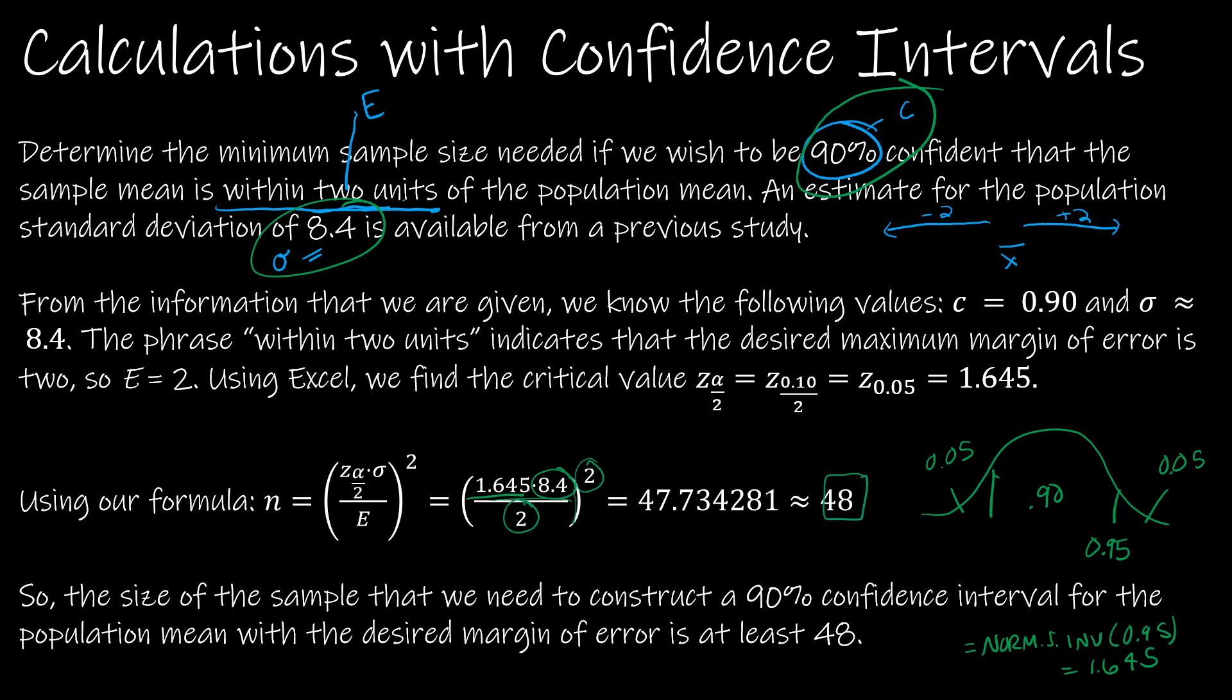And that's about 48. So we always are going to round up. So about 48. So the sample size that we need to construct a 90% confidence interval for the population mean with the margin of error of 2, is at least 48.